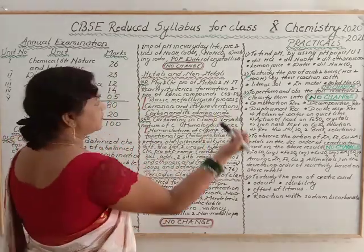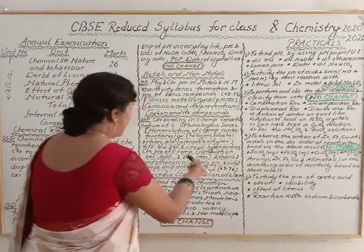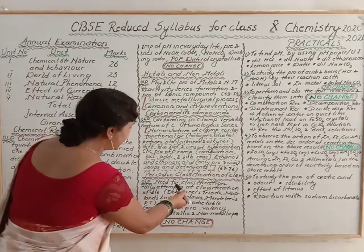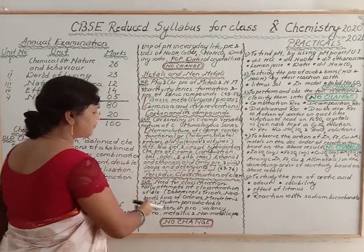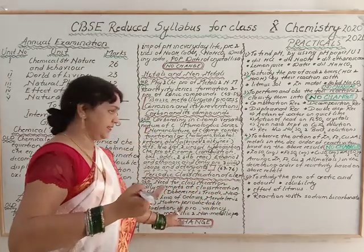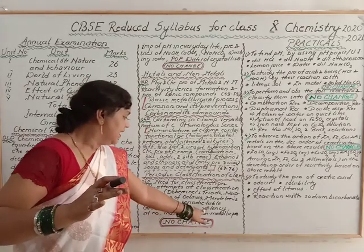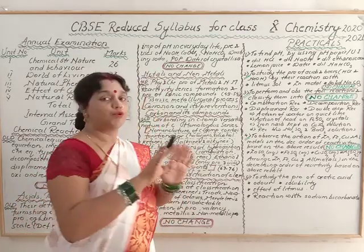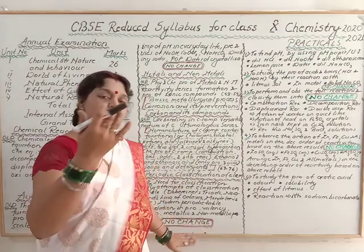The fifth and last chapter is Periodic Classification of Elements. The syllabus includes: need for classification, earlier attempts at classification of elements, Döbereiner's triads, Newland's law of octaves, Mendeleev's periodic table, modern periodic table and law, and gradation in properties — valency, atomic number, metallic and non-metallic properties. There is no change in this chapter; the entire portion needs to be studied.